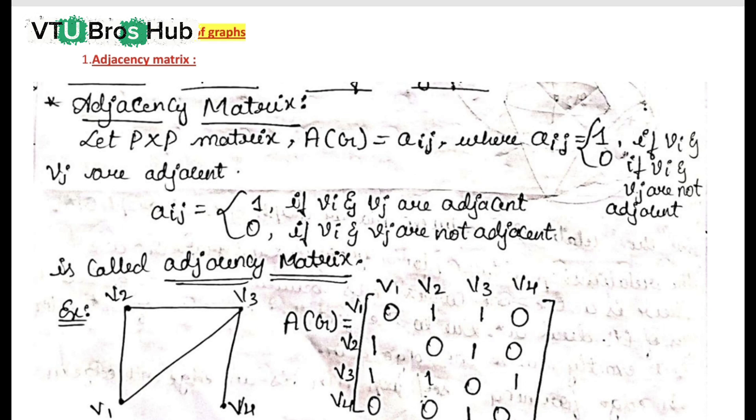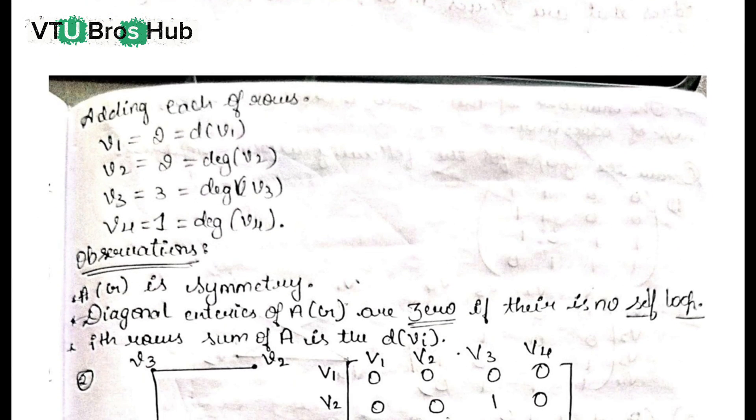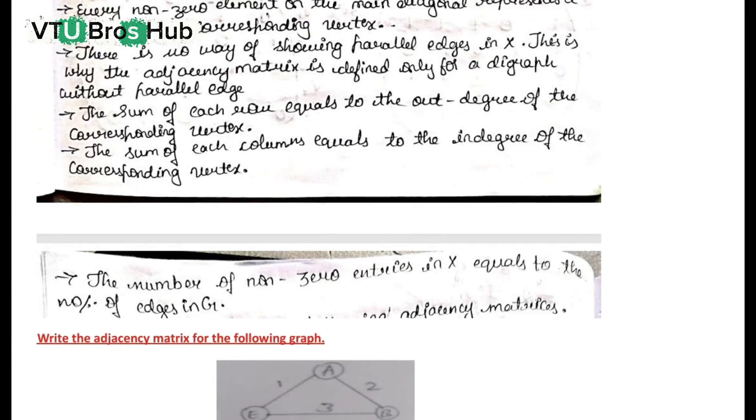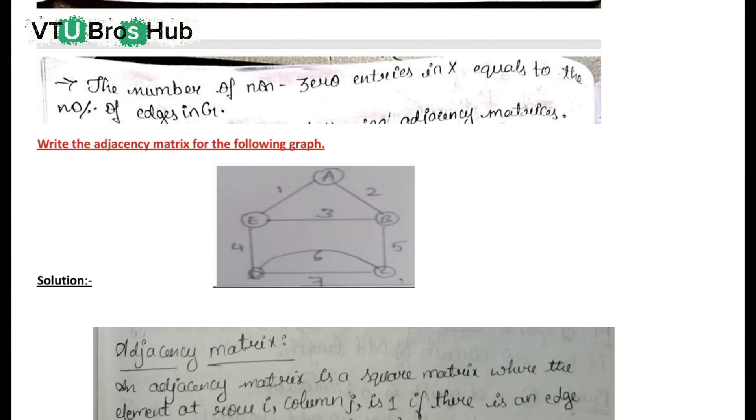Question 5: Matrix representations of graphs. Adjacency matrix: An adjacency matrix shows which vertices are directly connected. Look at the shown graph and its matrix on screen. 1 means connected, 0 means not connected.